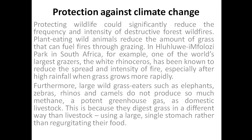For example, in one particular park in South Africa, which has one of the world's largest grazers — especially the white rhinoceros — the white rhinoceros is known to reduce the spread and intensity of fire, especially after high rainfall when grasses grow more rapidly, because those grasses are eaten by the white rhinoceros. Also, large wild grass eaters such as elephants, giraffes, rhinos, and camels do not emit large amounts of methane, which is a major greenhouse gas responsible for climate change. But our livestock like cattle produce large amounts of methane.